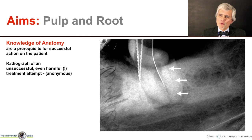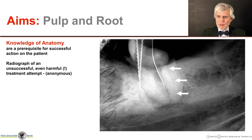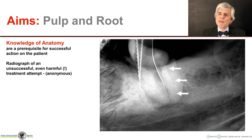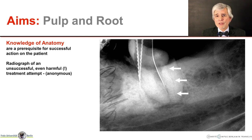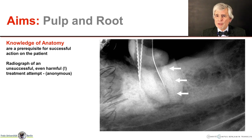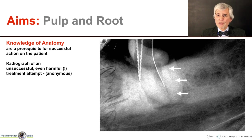I have marked the correct root canal in the picture with white arrows. You can just about recognize it if you know where it runs. It is quite narrow here because it is probably an older patient. In the course of time, there has been a significant reduction in the volume of the pulp cavity because dentine accumulates from the inside walls throughout life. This does not necessarily make root canal treatment any easier. We have to take a closer look at the anatomical conditions — first of all, let's get an overview.